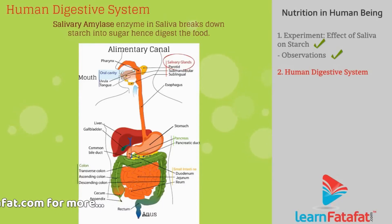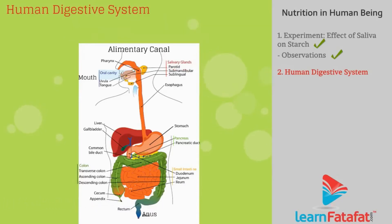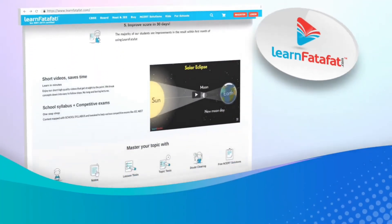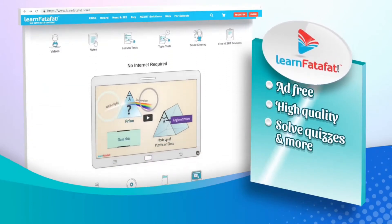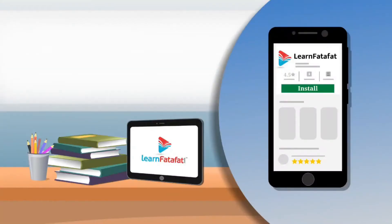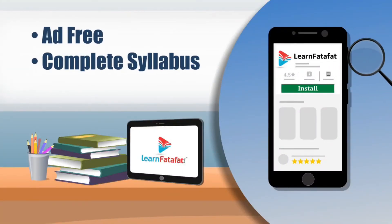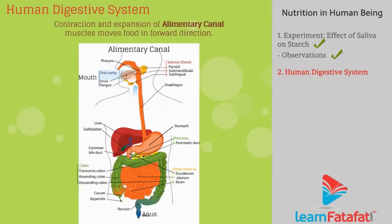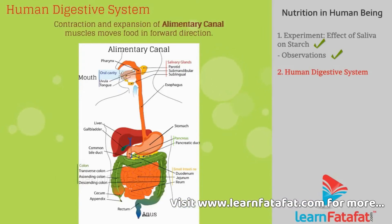Hence, saliva digests the food. Tongue and mouth help to mix saliva thoroughly with the food. Contraction and expansion of alimentary canal muscles move food in the forward direction.